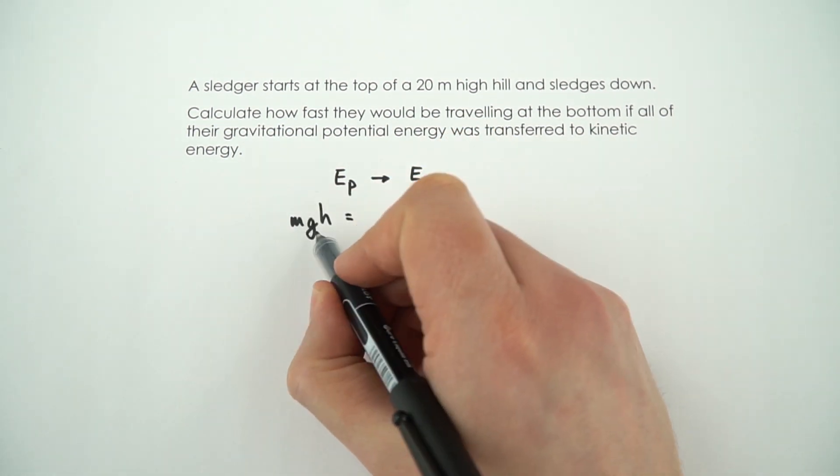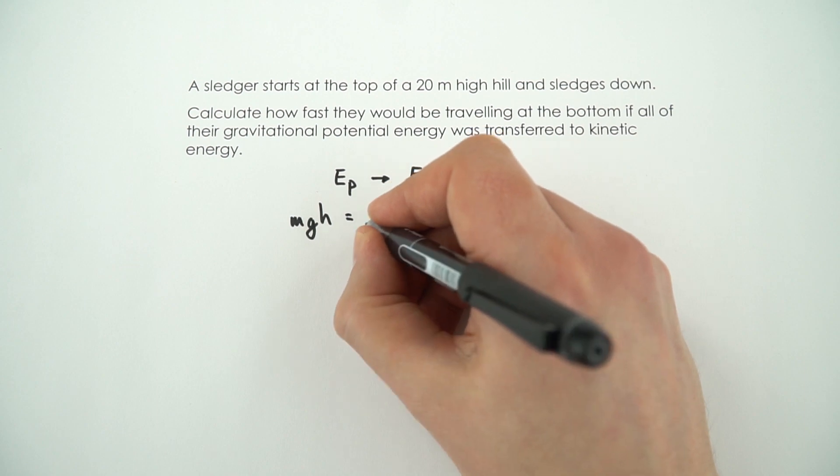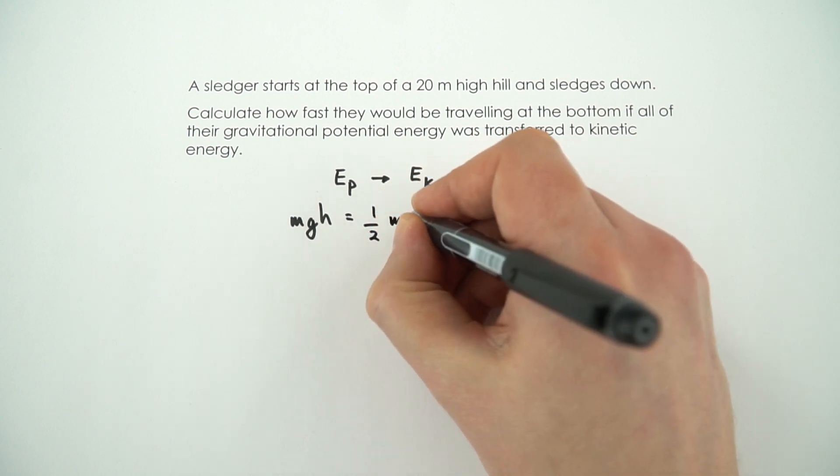So the initial potential energy, mgh, is going to be equal to the final kinetic energy, which is a half mv squared.